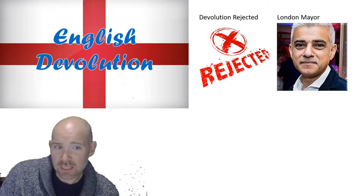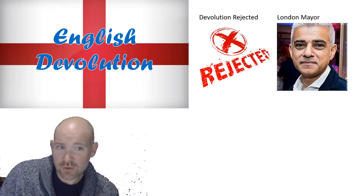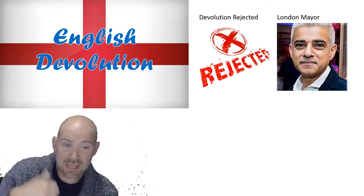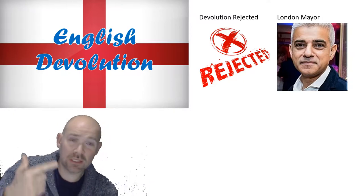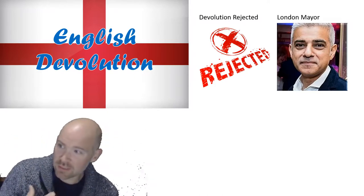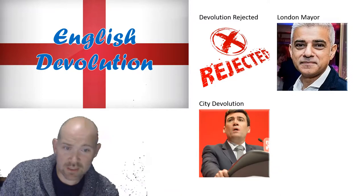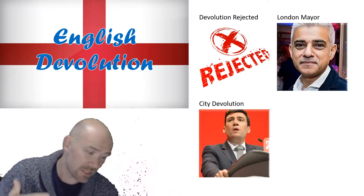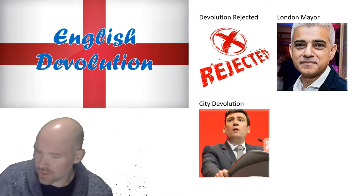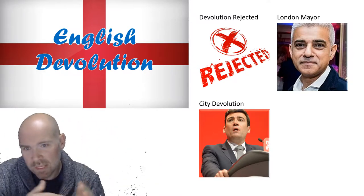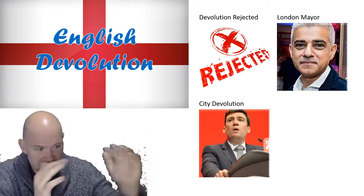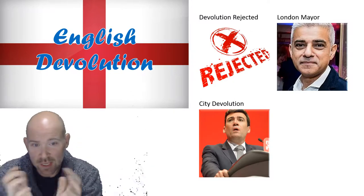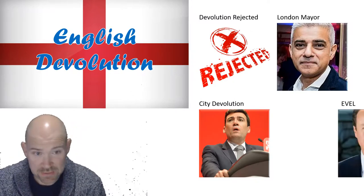What's ended up happening is that devolution has been done through city devolution or mayors. Most famously the London mayor — there was Ken Livingstone, then Boris Johnson, and now Sadiq Khan. But so do other cities. Andy Burnham is the mayor of Manchester, Liverpool has their own mayor, and others as well. They're kind of rolling out English devolution by putting in small assemblies for individual cities, rather than creating a single English parliament.